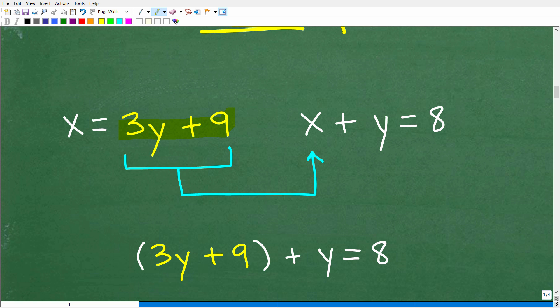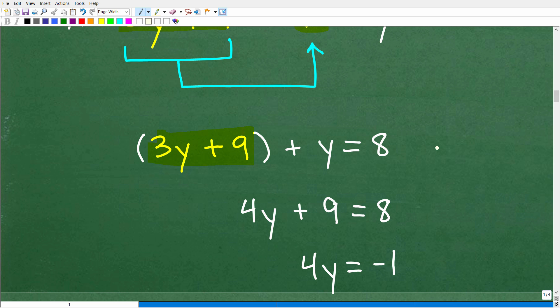All right, so x is equal to 3y plus 9. We're going to replace this x with 3y plus 9. And now we have what we wanted, which is one equation with one variable. So I have one equation and we have one variable y.